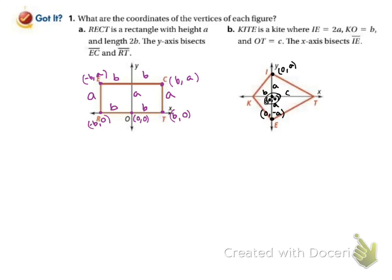Going back to the origin and moving to the left to this vertex — going left changes x, so y is still 0. We went left b, so going left is negative, making x coordinate negative b, giving (−b, 0). Going back to the origin and moving to the right to the last vertex — going right changes x, y stays 0, and we went right c, so x coordinate is c, giving (c, 0).